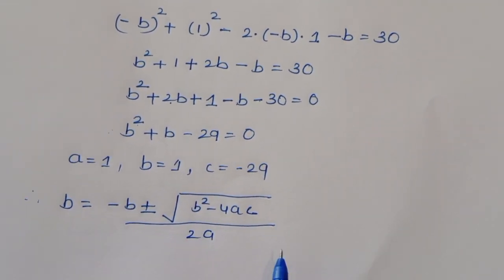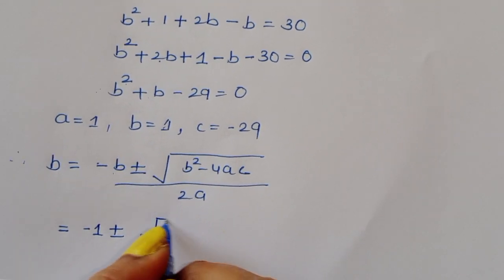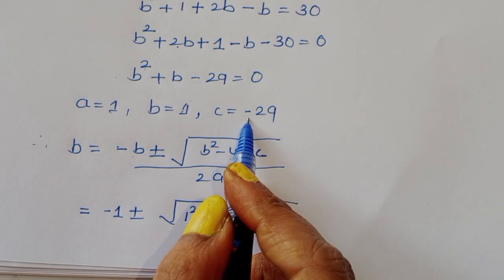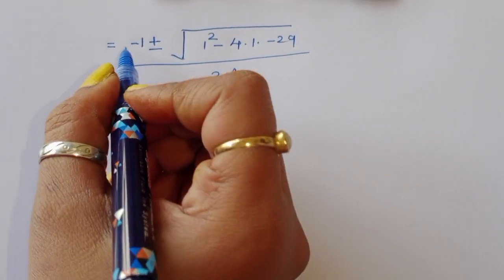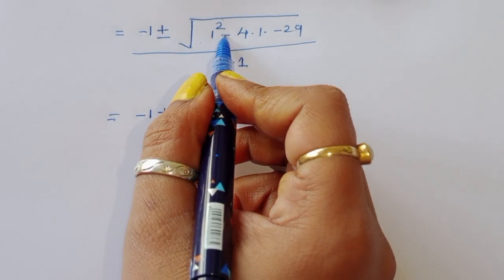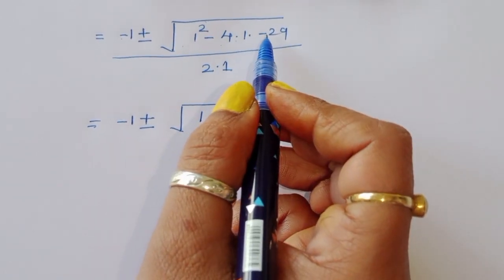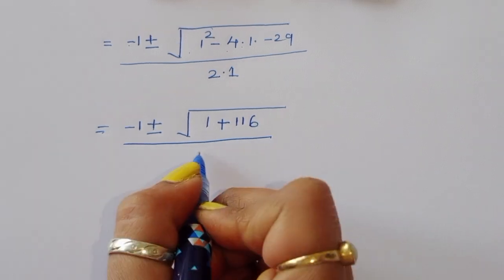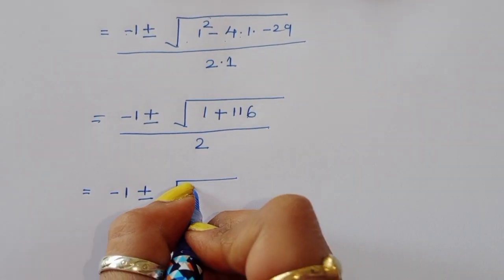Applying the quadratic formula: b equals (minus b plus or minus square root of b squared minus 4ac) divided by 2a. Substituting: minus 1 plus or minus square root of (1 minus 4 times 1 times minus 29) divided by 2. That gives minus 1 plus or minus square root of (1 plus 116) divided by 2.